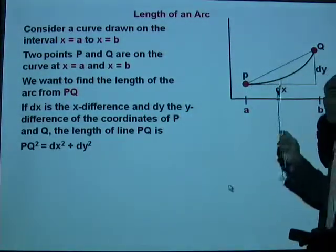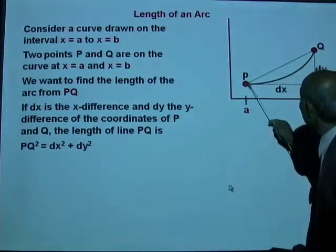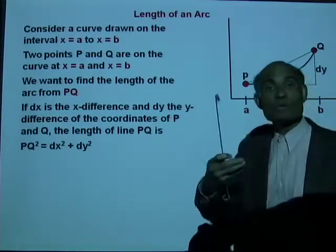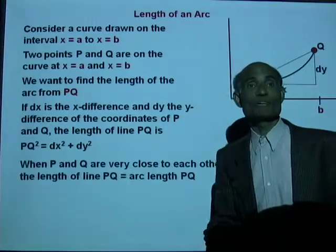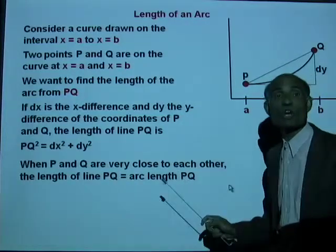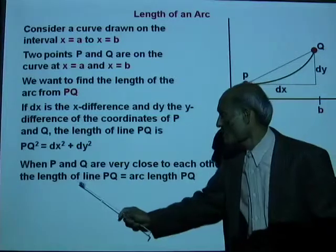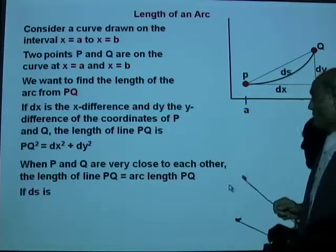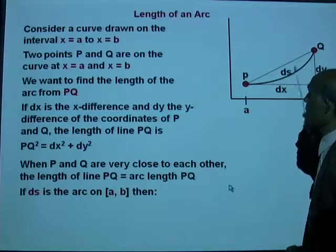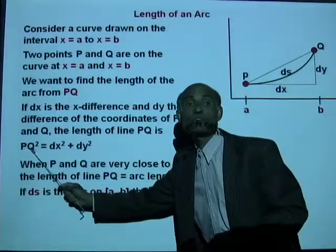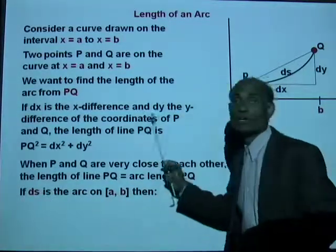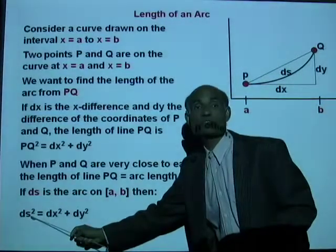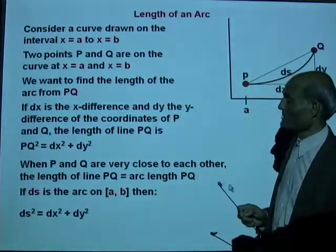Now, if p and q are sufficiently close to each other, then the length of the arc pq will actually be equal to the length of the straight line pq. That is the method we are actually going to use in this section. When p and q are very close to each other — in other words, the distance is very small — then the length of the line pq equals the length of the arc pq. If ds is the length of the arc, we will replace pq by ds. Then we have ds squared equal to dx squared plus dy squared.